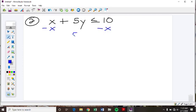That leaves us with 5y is less than or equal to negative x plus 10. And we need to divide everything by 5. We did not divide by a negative this time. So we do not flip our inequality.